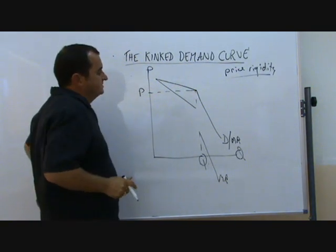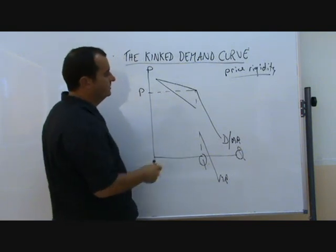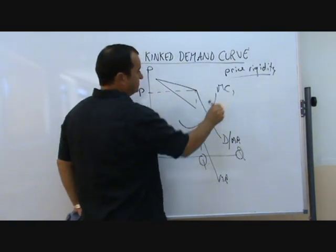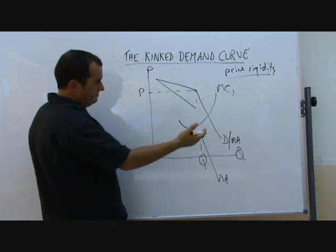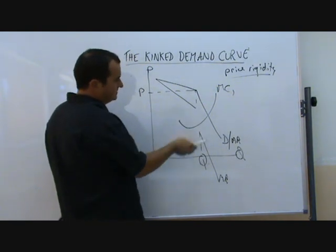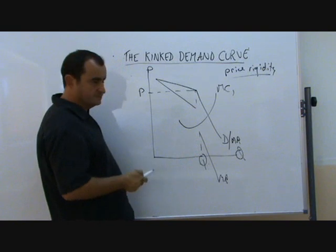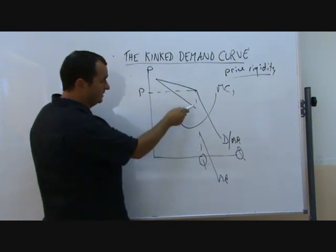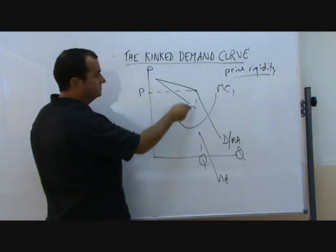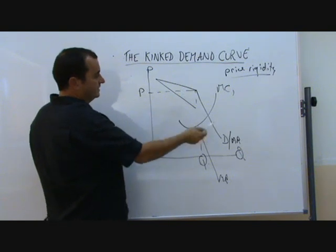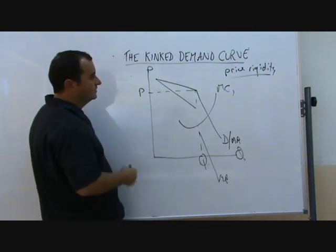Well the relevance of this is quite simple to understand once we put in the MC curves. If the marginal cost curve MC1 is there, then it makes sense that by profit maximizing, by producing where MC equals MR, they will produce at Q and price will be P right off the AR curve. But look what happens when costs change.